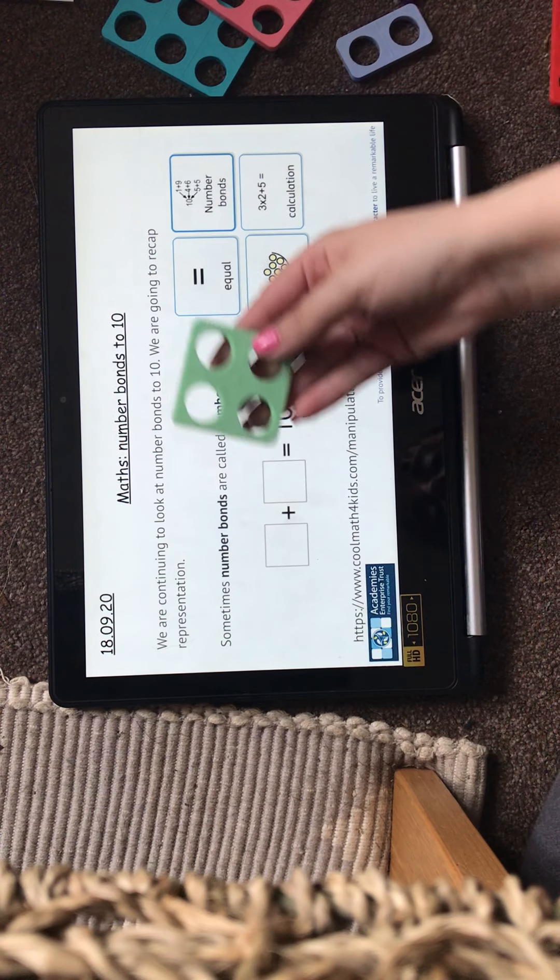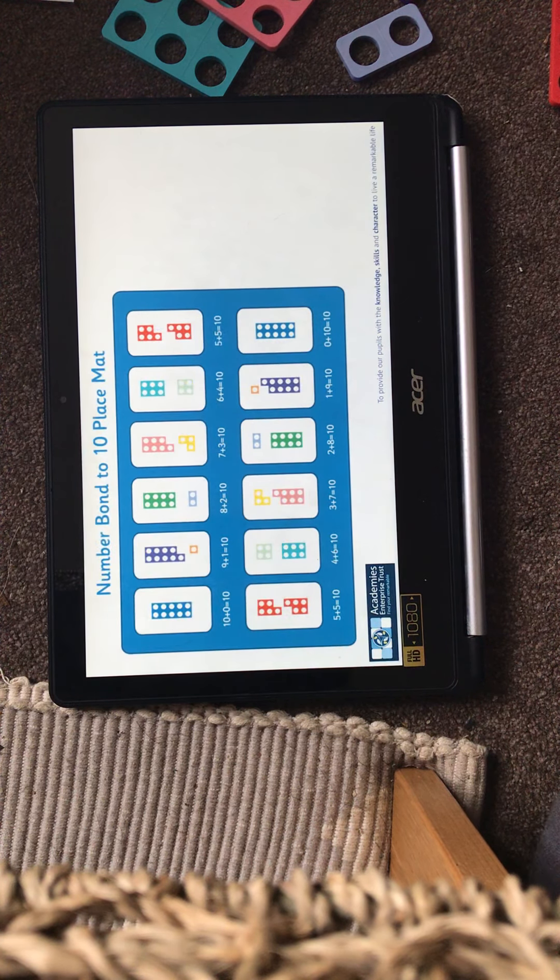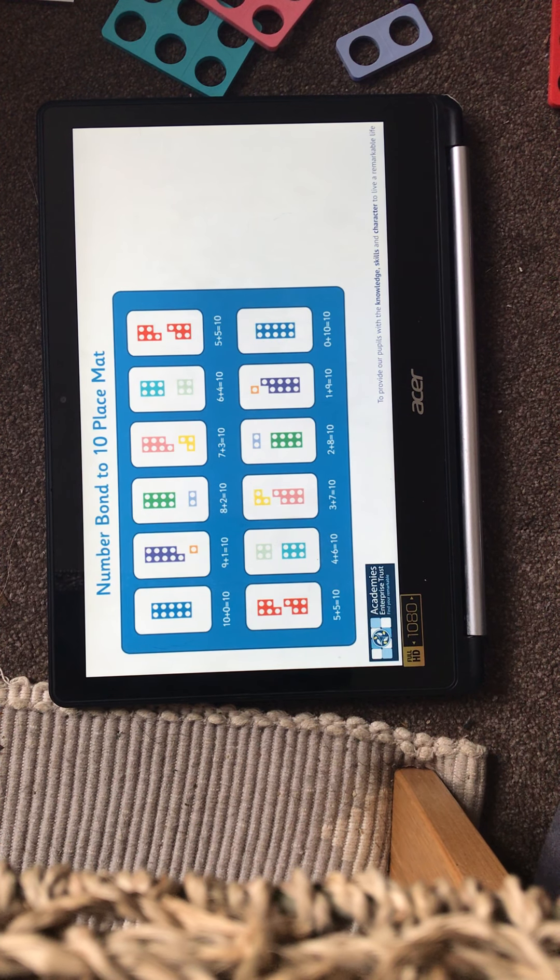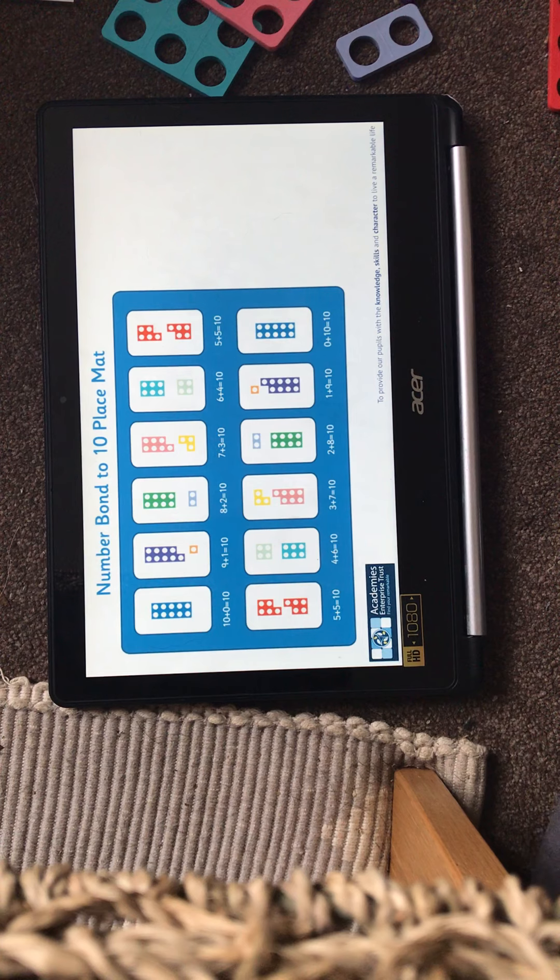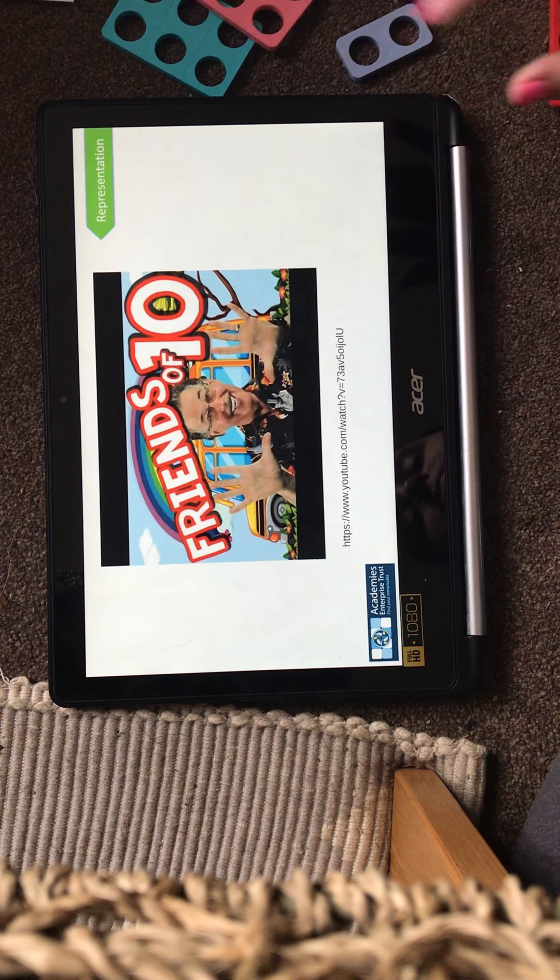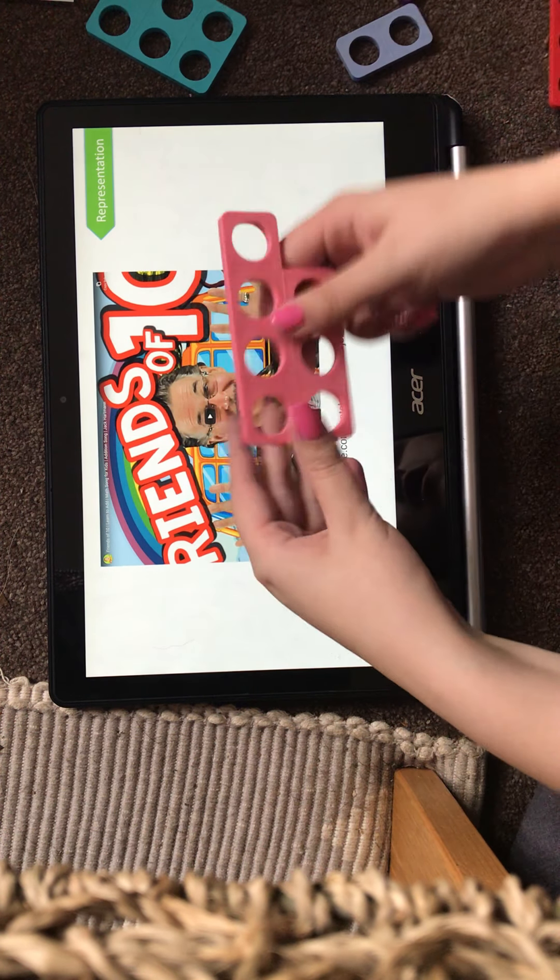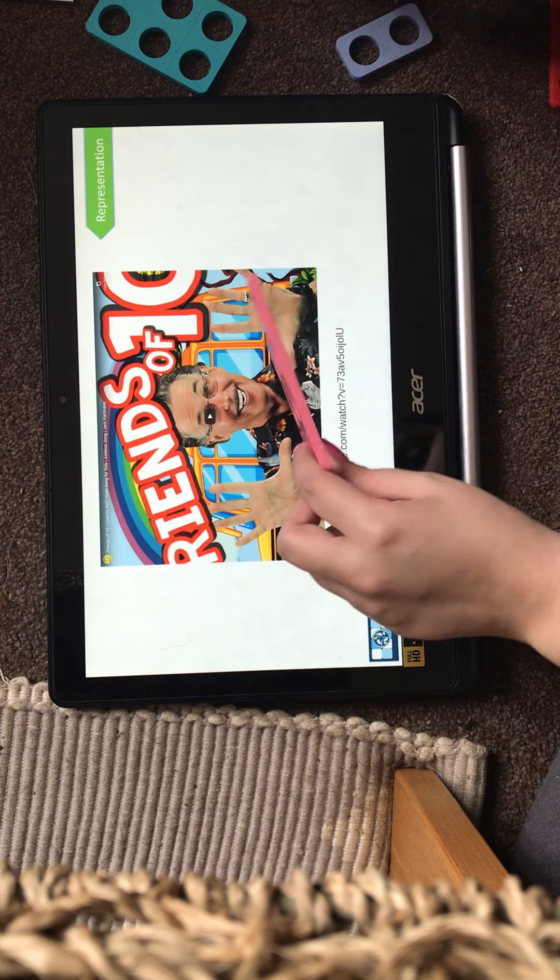But we will be using our Numicon and different resources to help us. So here is a handy thing to help you out. This is our number bonds to 10, and here's all our numbers using Numicon, which we use quite a lot at school. So I'll leave this one for you to look at in case you need to, and I'll make sure I link it in our Class Dojo. And we have our Friends of 10 song, which is also what we call our Numicon.